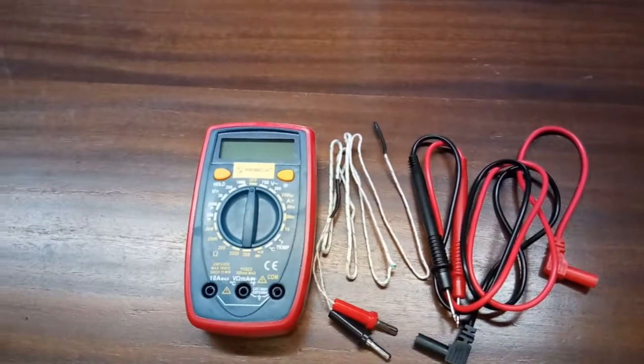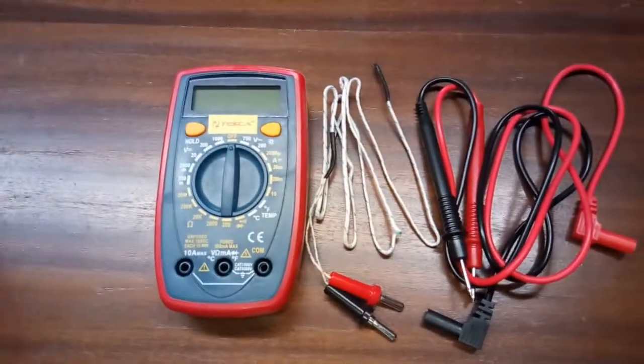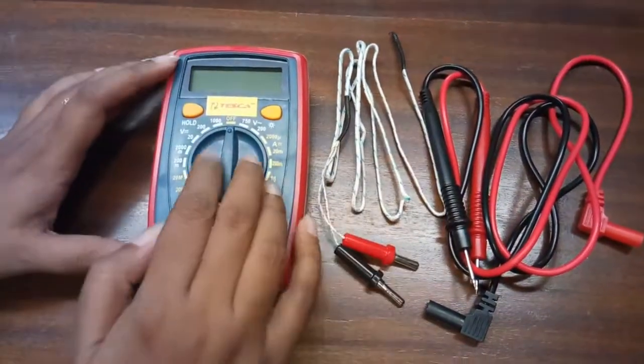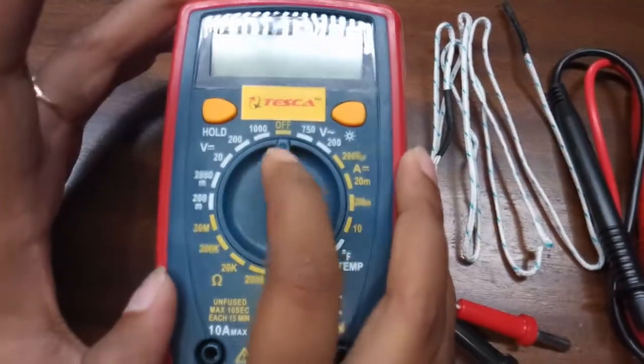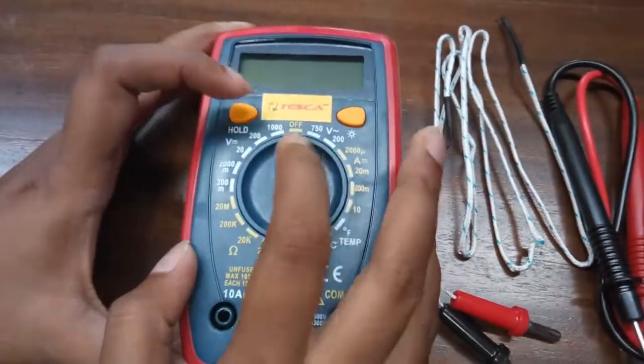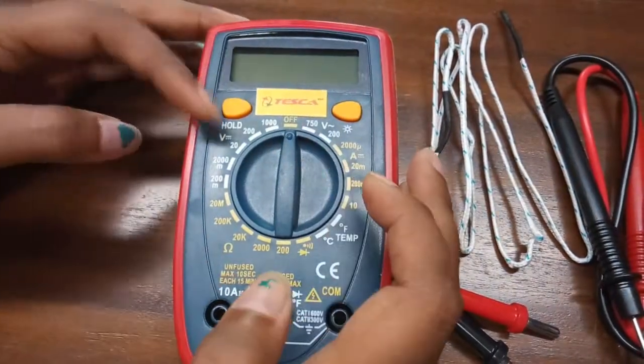This is a basic standard multimeter. First, this is the knob. With the help of this knob, there is a little circle here. With this, we can select different types of range.